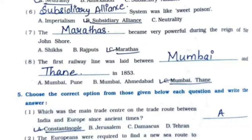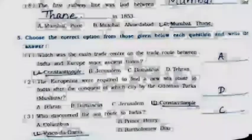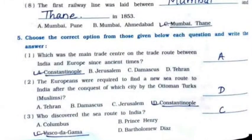Seventh: The Marathas became very powerful during the reign of Sir John Shore — option C. Eighth: The first railway line was laid between Mumbai and Thane in 1853 — option C.